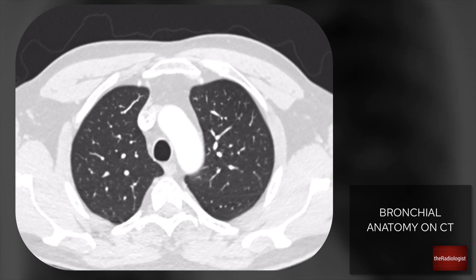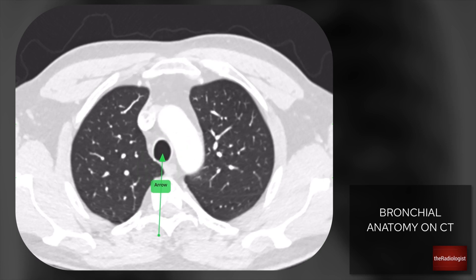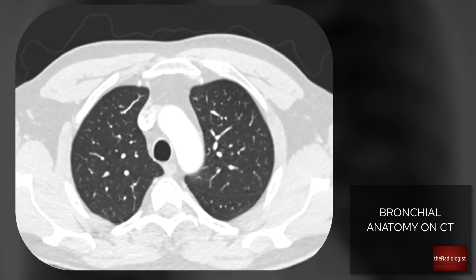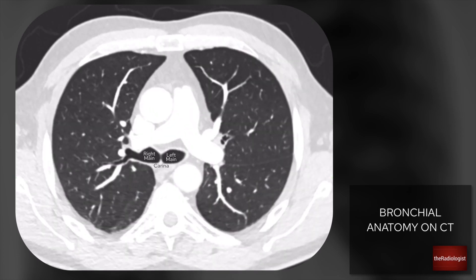Firstly, we can see this black structure in the middle is the trachea. I've flipped it onto lung windows here - that's the best way to look at the airways. This in the middle is your trachea. We're going to follow that down and it splits off here at the carina into right and left main bronchus.